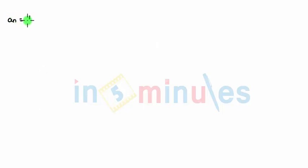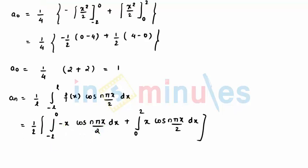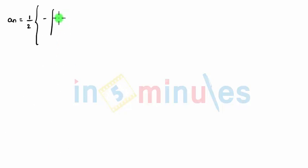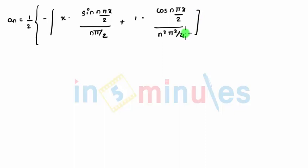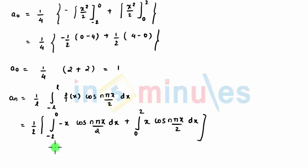This comes to be aₙ equal to 1/2 and the integration — when we integrate, let the minus be outside — so we write x cos(nπx/2). We need to integrate: x times integration of cosine is sine(nπx/2) divided by nπ/2, minus differentiation of x which is 1, again integration of sine gives cos(nπx/2) divided by n²π²/4. So that comes to be my first integration.